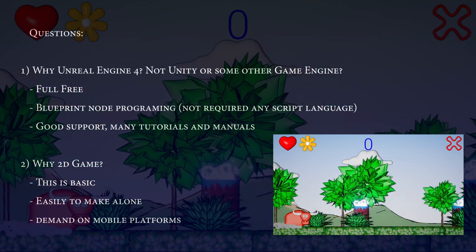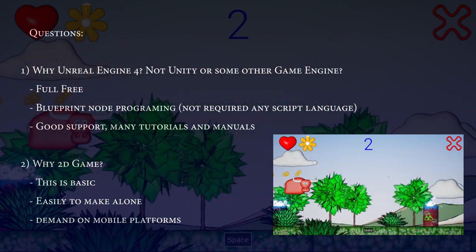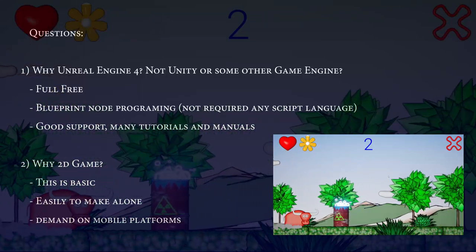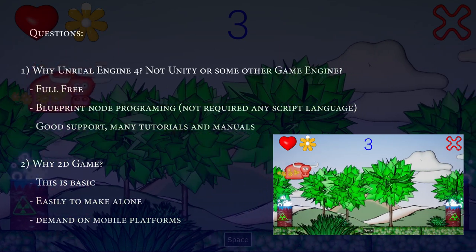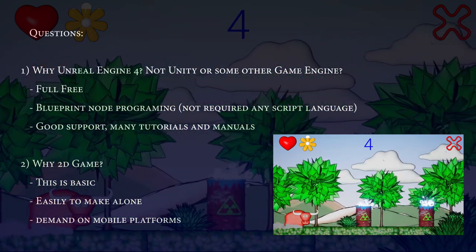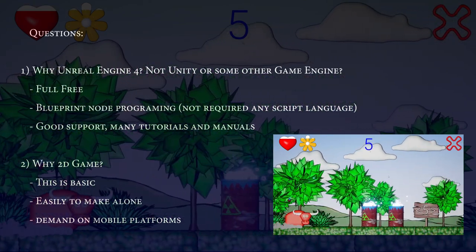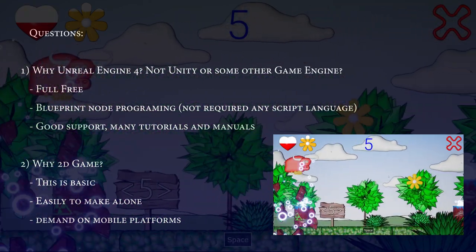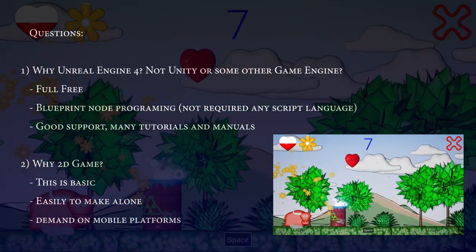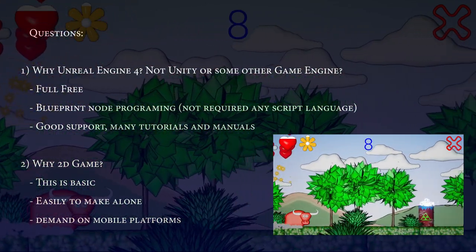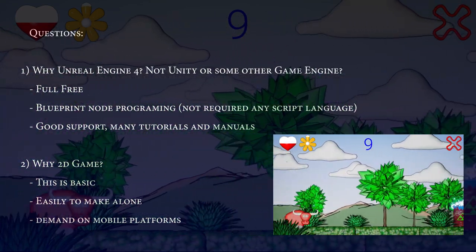You may have a question — why Unreal Engine 4, when you could use Unity or another game engine? First of all, Unreal Engine 4 is completely free — you can download it from the internet without any additional payment. Second, you can use Blueprint node programming, so it's not necessary to learn a scripting language. Finally, Unreal Engine 4 has good support, many tutorials on YouTube, and many manuals.